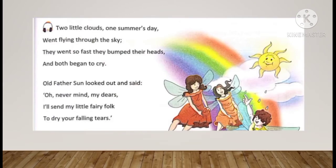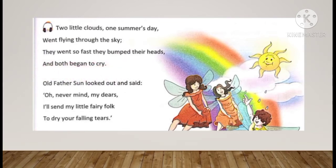The poem reads: 'Two little clouds one summer's day went flying through the sky, they went so fast they bumped their heads and both began to cry.' Is mein bola hai: doh chute-chute clouds thay, ek summer day — summer means jab garmiyan hoti hain — unka ek din jab doh clouds fly kar rahe thay, woh itne fast thay ki un dono ke heads ki takkar ho gayi aur dono rona start kar diya.